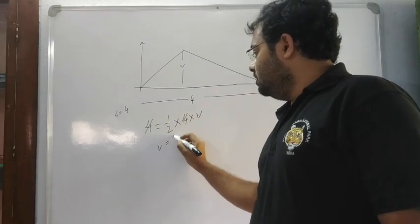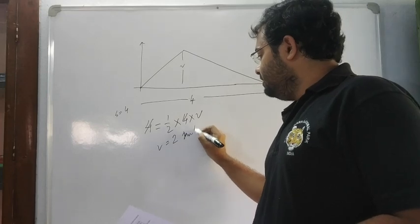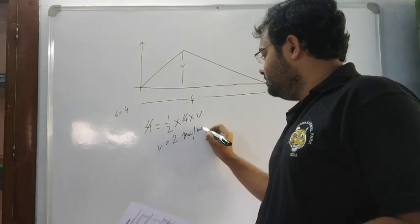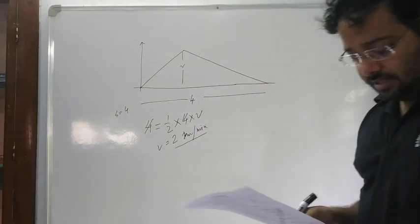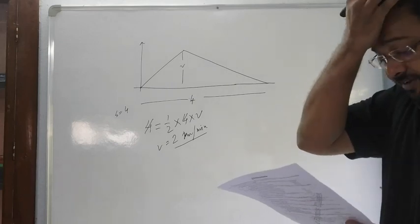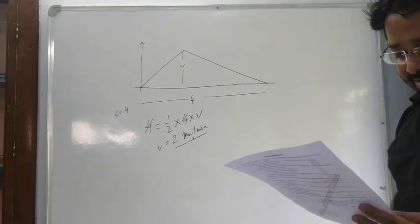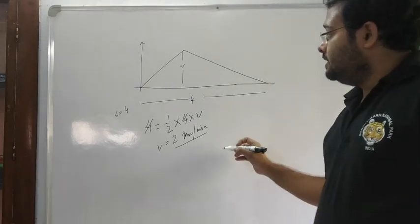So v equals 2 km per minute. This is the maximum velocity achieved.